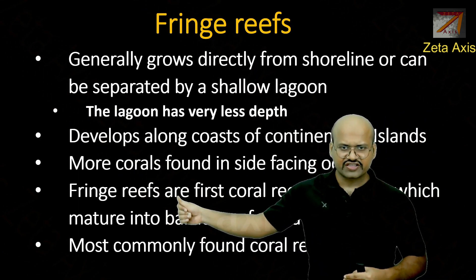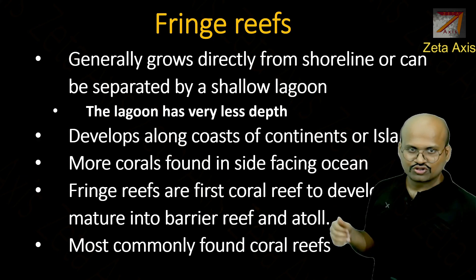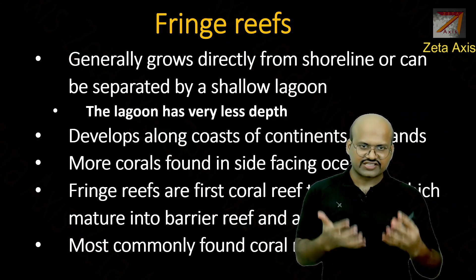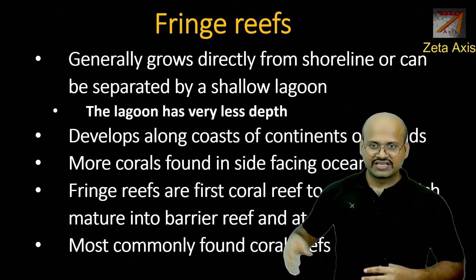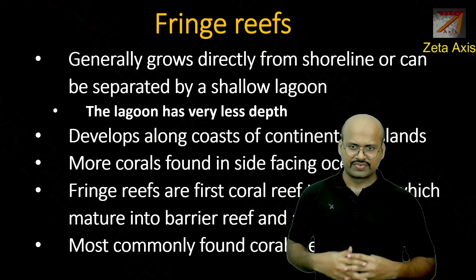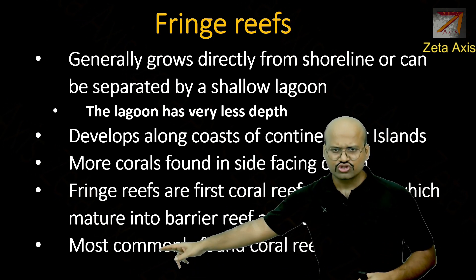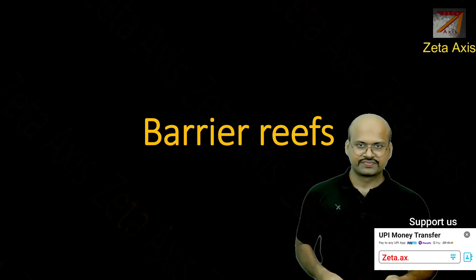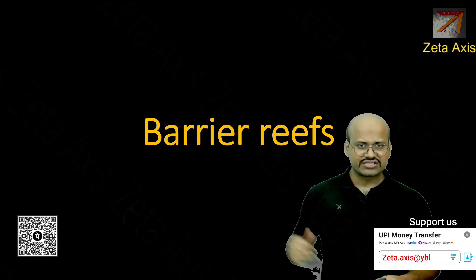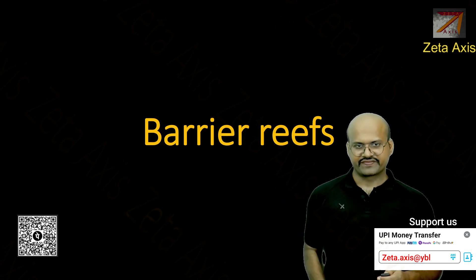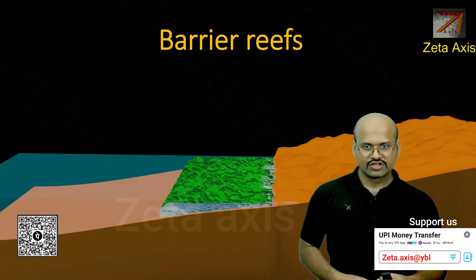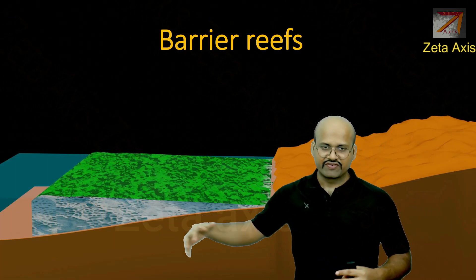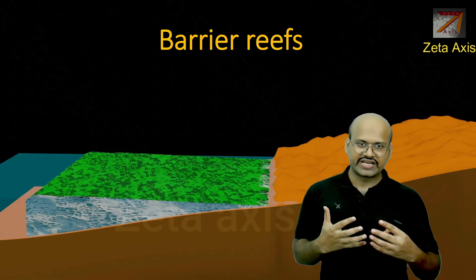Fringe reefs are the first coral reefs to form — when coral reef formation begins, fringe reefs are the first stage. These are the most commonly found coral reefs around the world. The next type is barrier reefs.